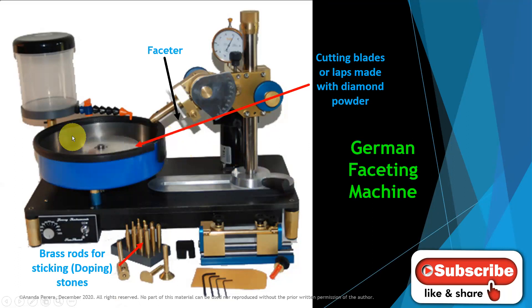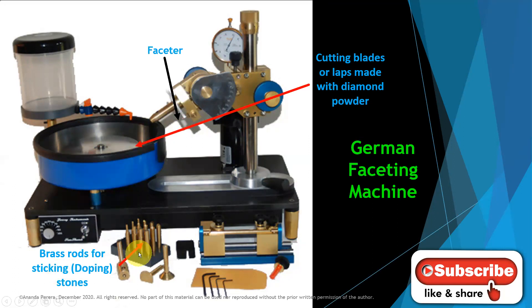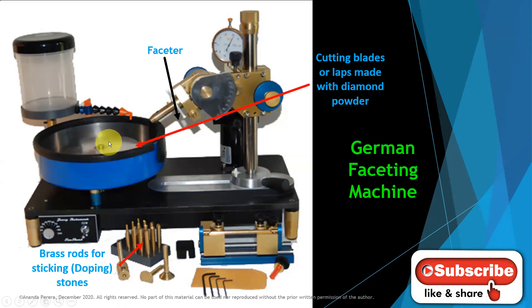This is also a German faceting machine. The laps are rotating horizontally. You can see the angles on the faceter here. This is the rod — it is joined into the gem using brass rods or doping sticks. These doping rods are 6 mm in diameter to fit with the faceter mouth. We stick the stone to the edge of the stick with heat and then send it to the faceter to cut. All the cutting laps are here with diamond powder.